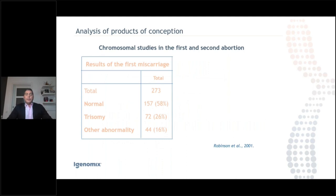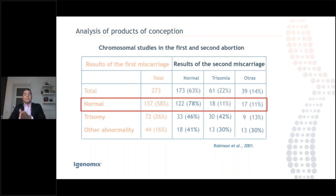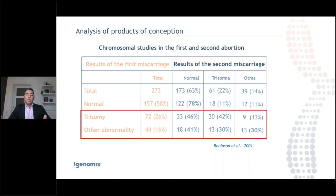In this study by the group of Robinson, they analyzed first miscarriages in patients and then observed results when the same patient had a second miscarriage. At the first miscarriage, they found almost 60% of those were normal euploid results. When the same patient had a second miscarriage, euploid results increased by 20% more. Conversely, when a patient had a first aneuploid miscarriage, the chance to have a second aneuploid miscarriage is also 20% higher.